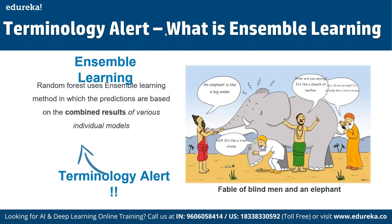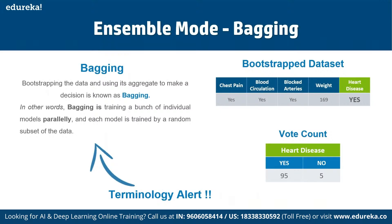Random forest uses the ensemble learning method, in which predictions are based on the combined results of multiple individual models. Think of the analogy of blind men and an elephant — one says it's like a snake, another says it's like a tree stump, another says it's like leather, another says it's like a furry mouse. These all represent different inputs that are combined to get the final result.